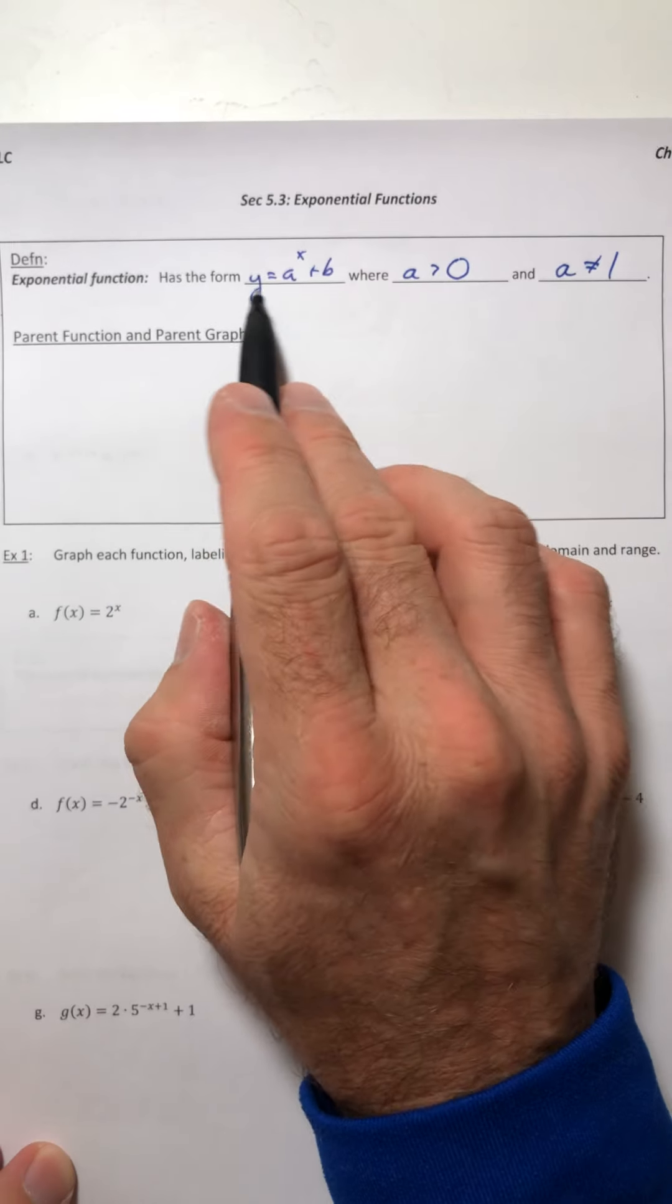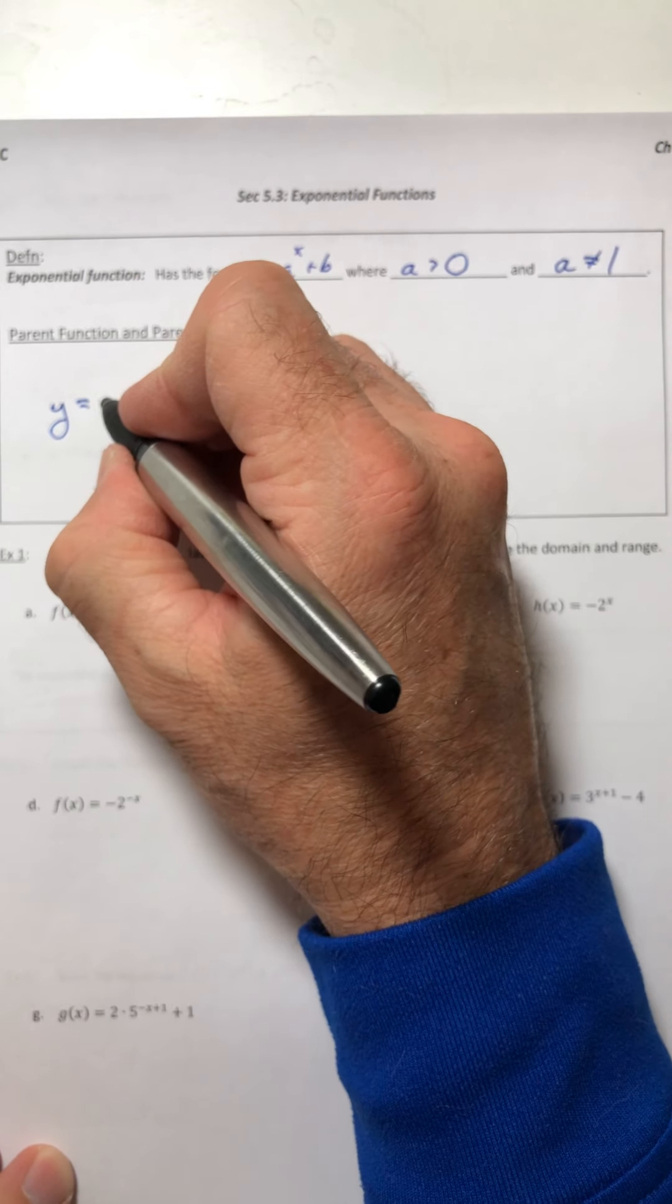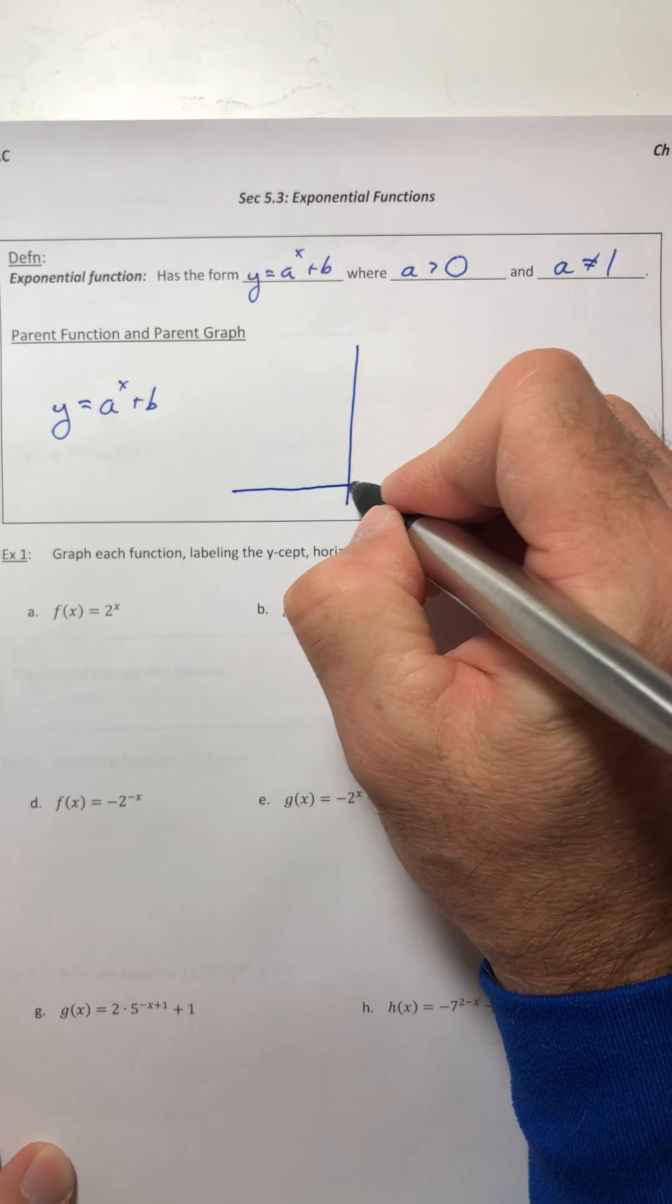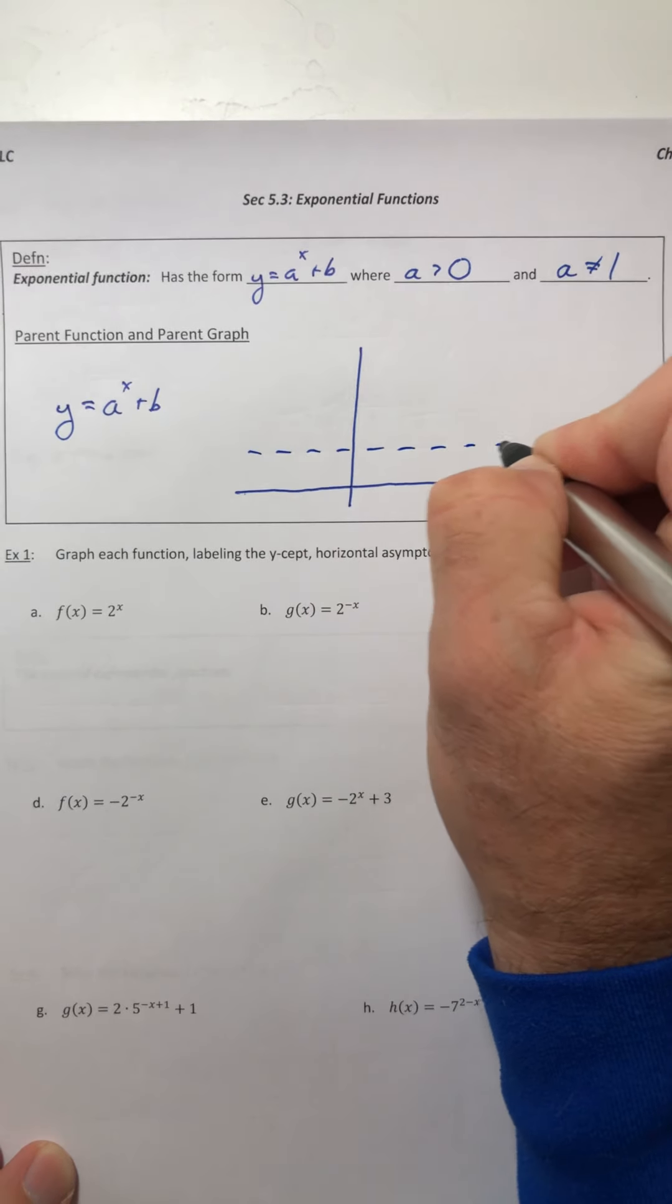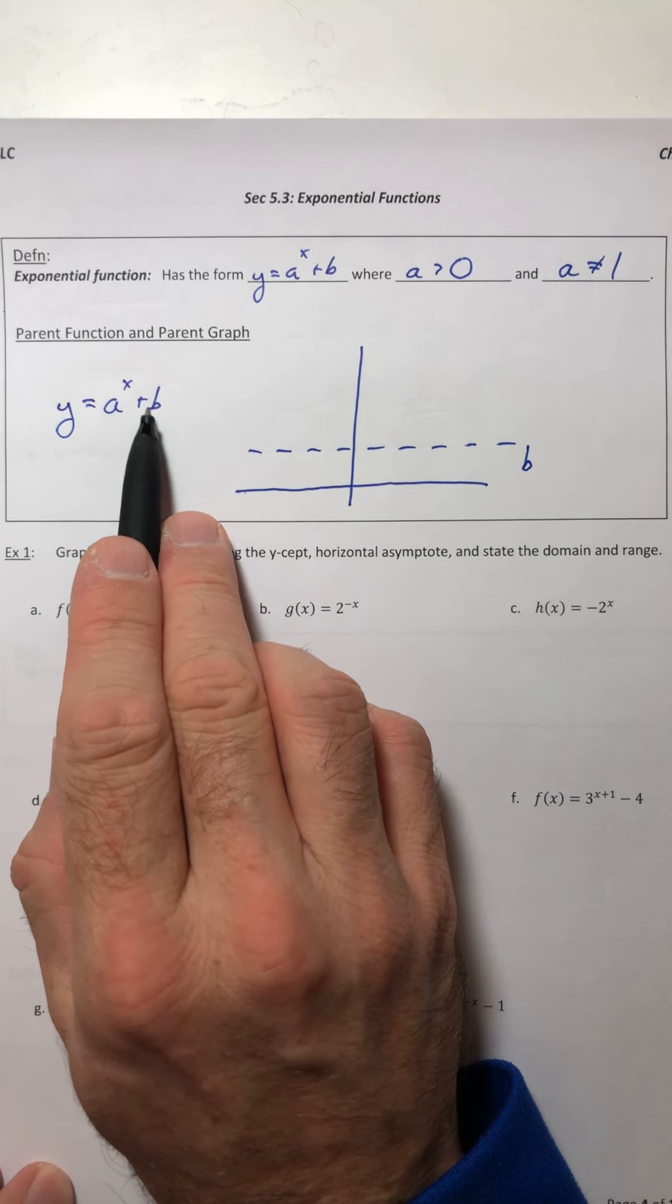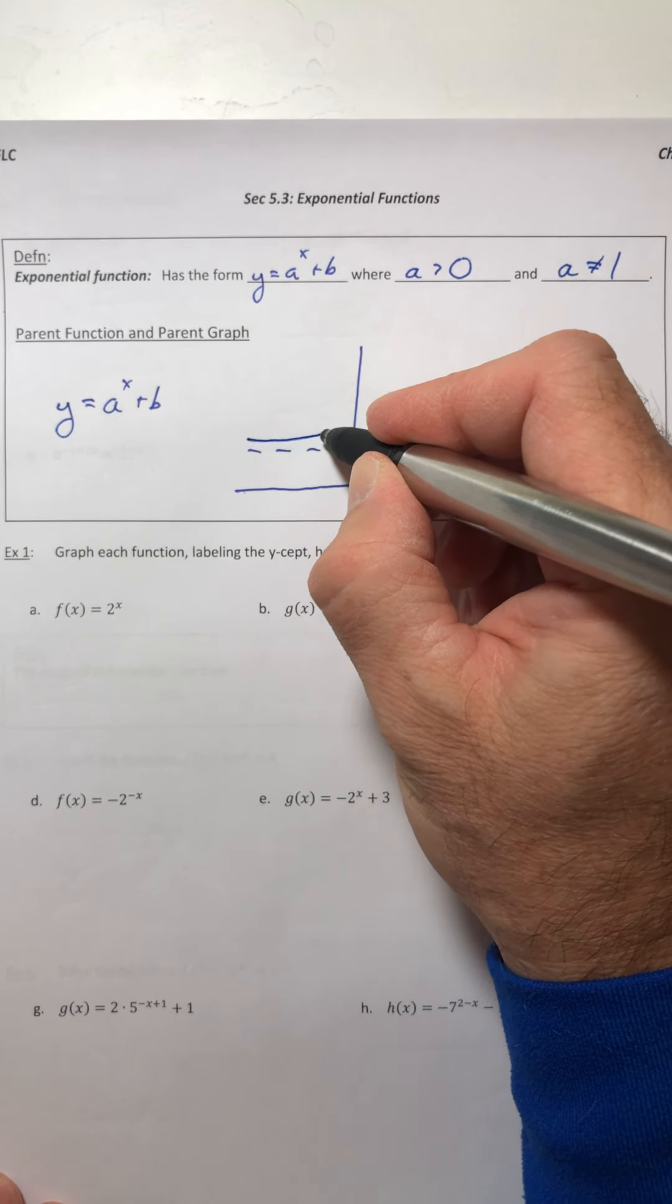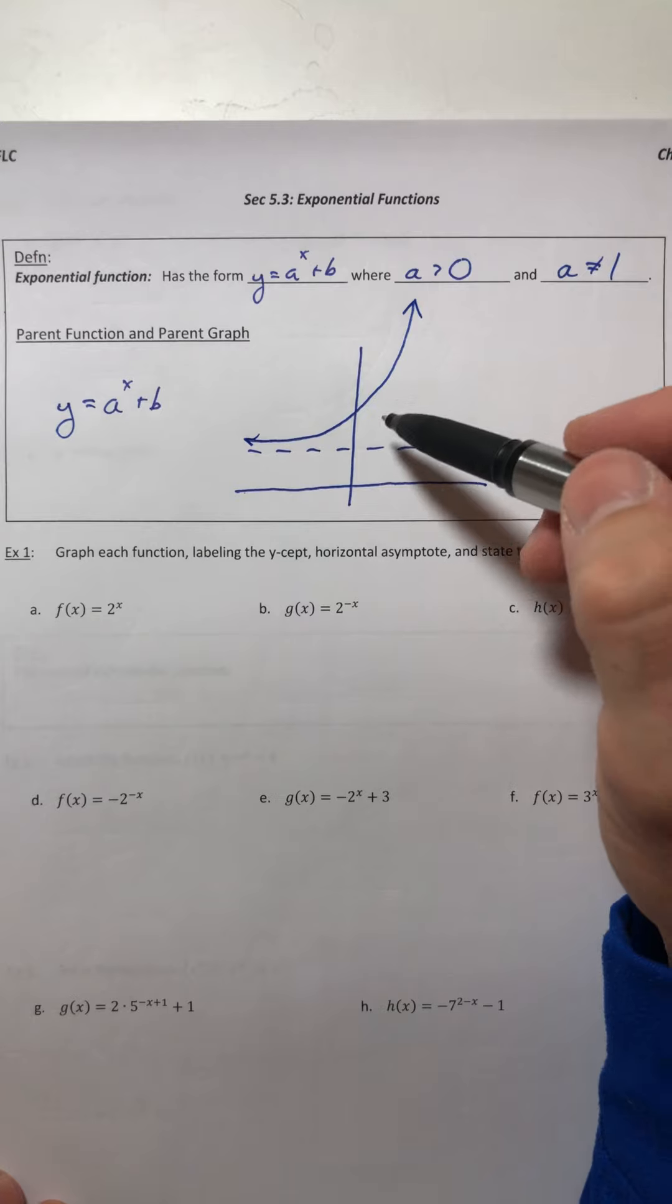So let's look at what the parent graph is for the parent function. The parent function is just this thing, y equals a to the x plus b. The graph is pretty distinct. There's a horizontal asymptote, not a vertical but horizontal, right at whatever this b value is. The curve is pretty flat on the left side but then it starts to curve up and then it goes practically vertical as x goes off to the right.